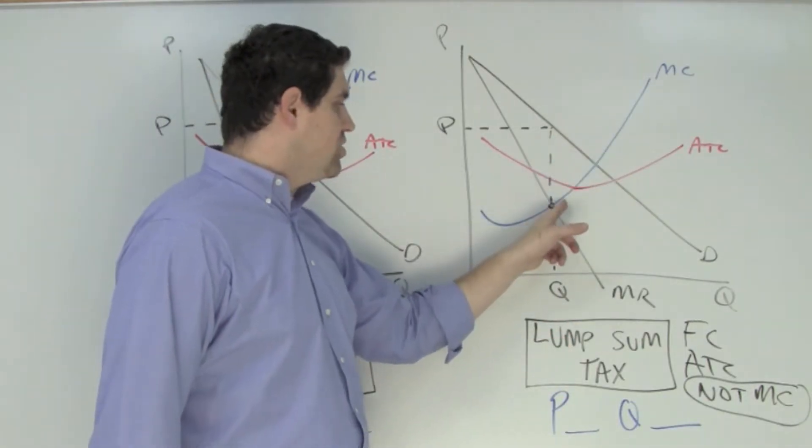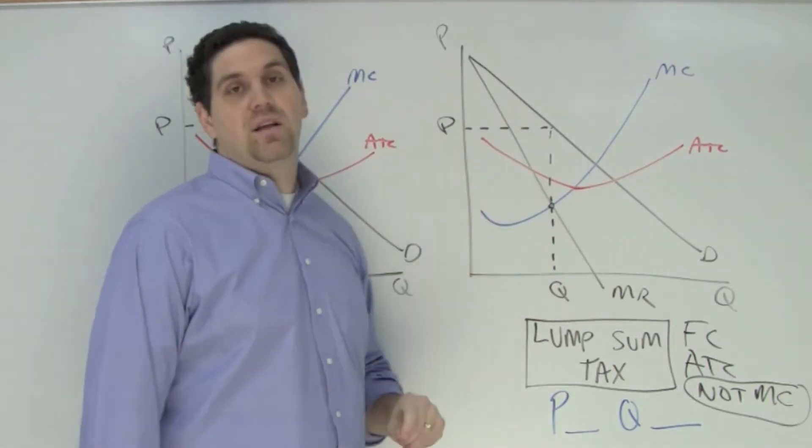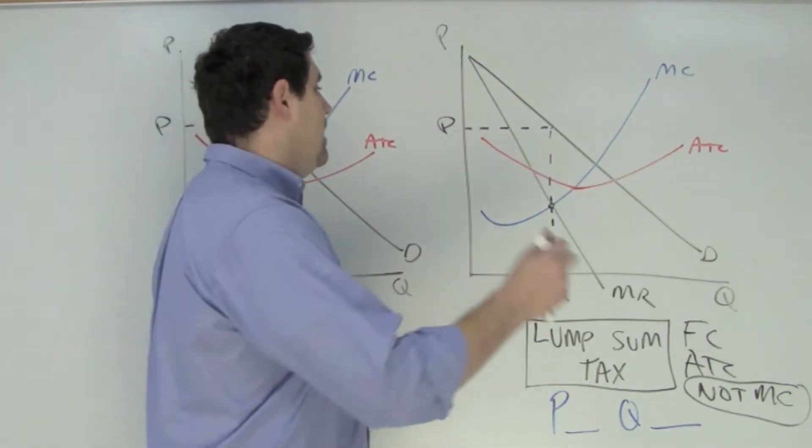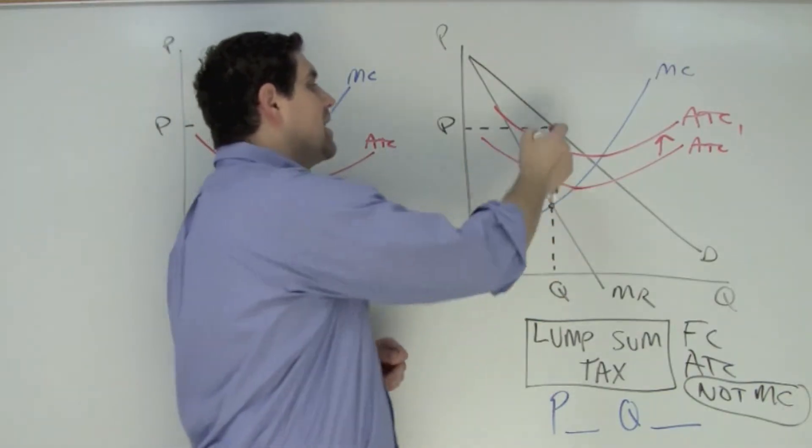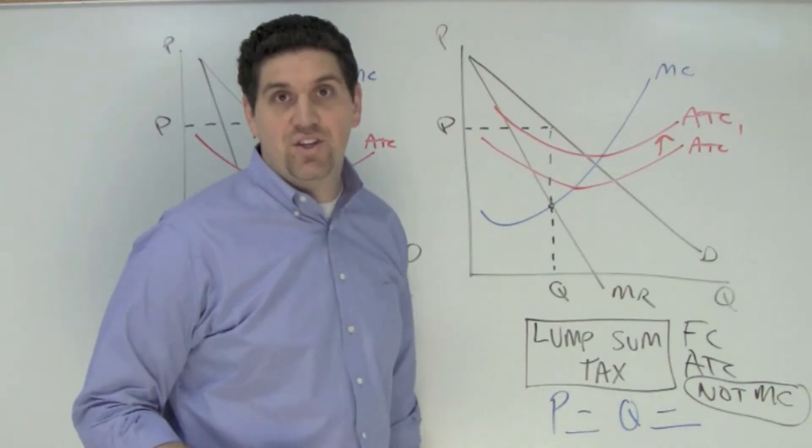If marginal cost doesn't change and marginal revenue doesn't change, then the quantity where MR equals MC is going to stay the same and the price is going to stay the same. The only thing that's going to change in this actual graph is the ATC. The ATC is going to shift upwards, which means this firm is going to make less profit. Price stays the same, quantity stays the same. That's the answer to the question.